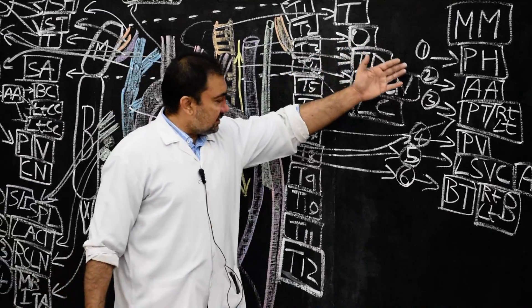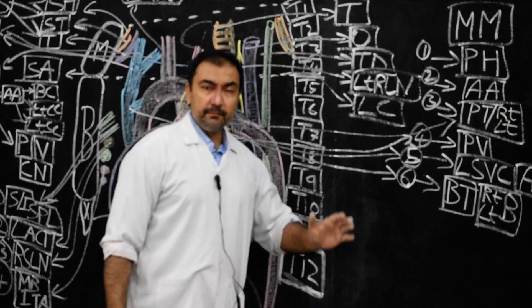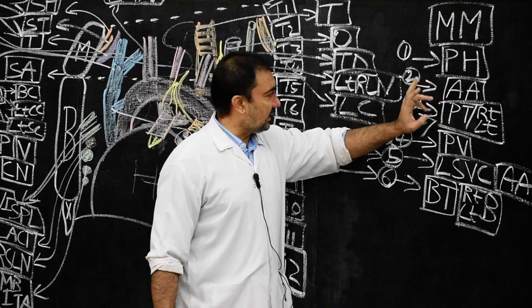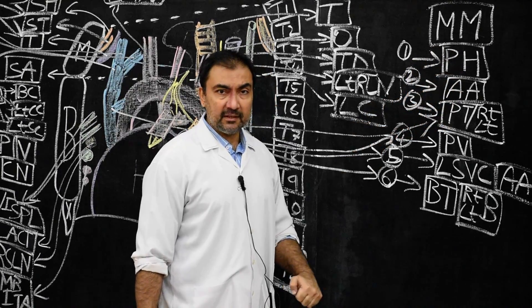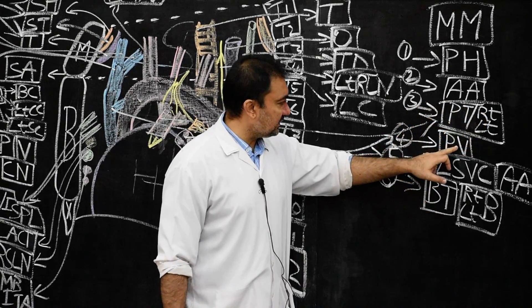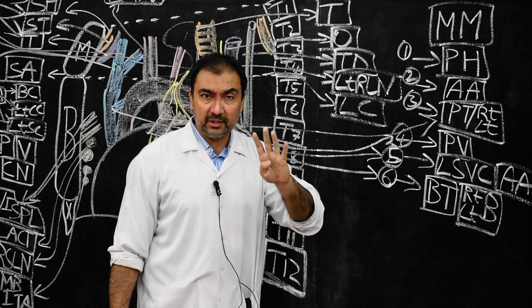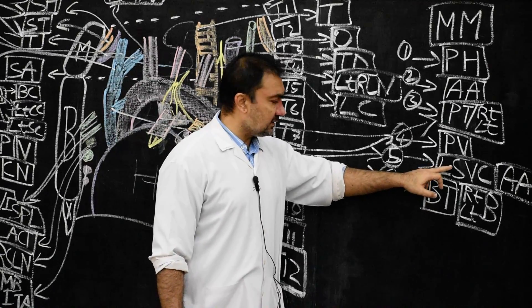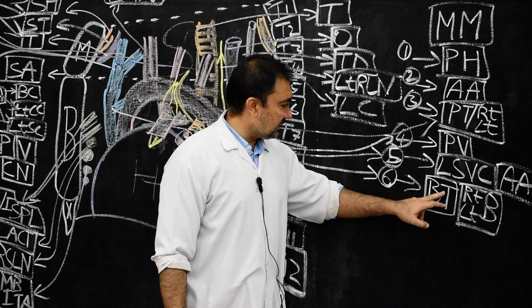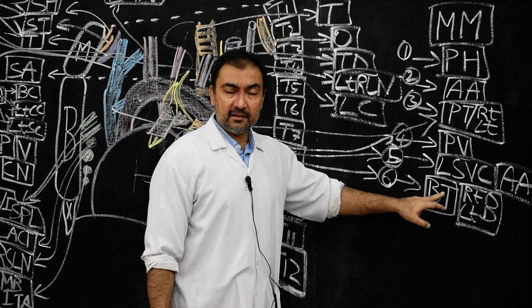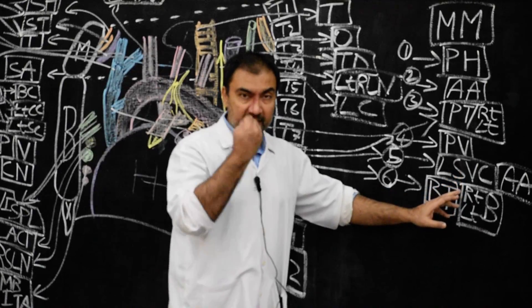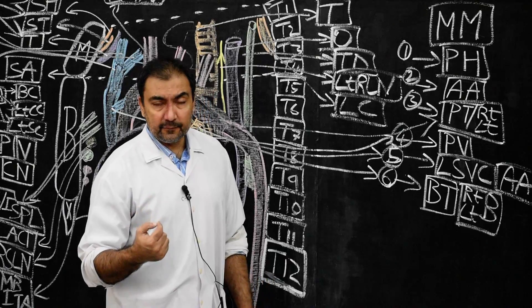These are the structures present in the middle mediastinum. Once again: pericardium including the heart, then ascending aorta, then pulmonary trunk and distribution into right and left pulmonary arteries, then the four pulmonary veins, then the lower part of superior vena cava where the arch of azygous vein is opening, and then bifurcation of the trachea into right and left bronchi including the inferior tracheobronchial lymph node.